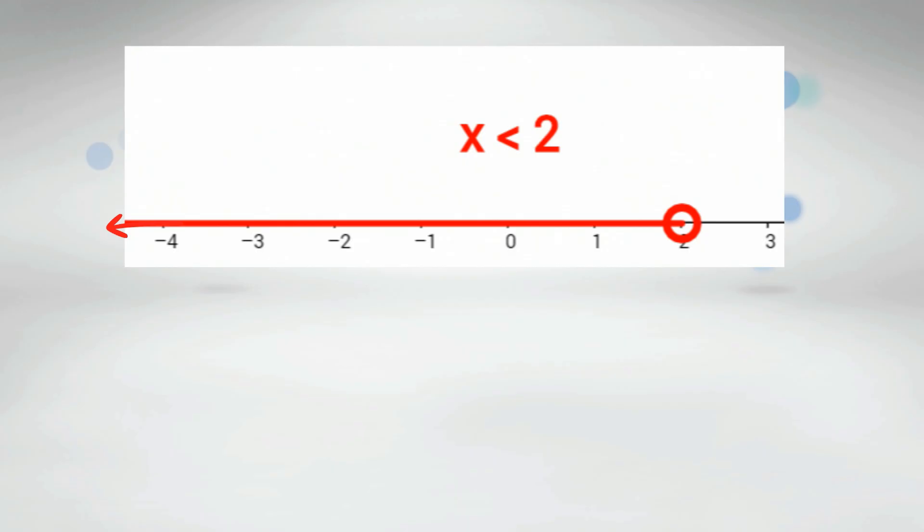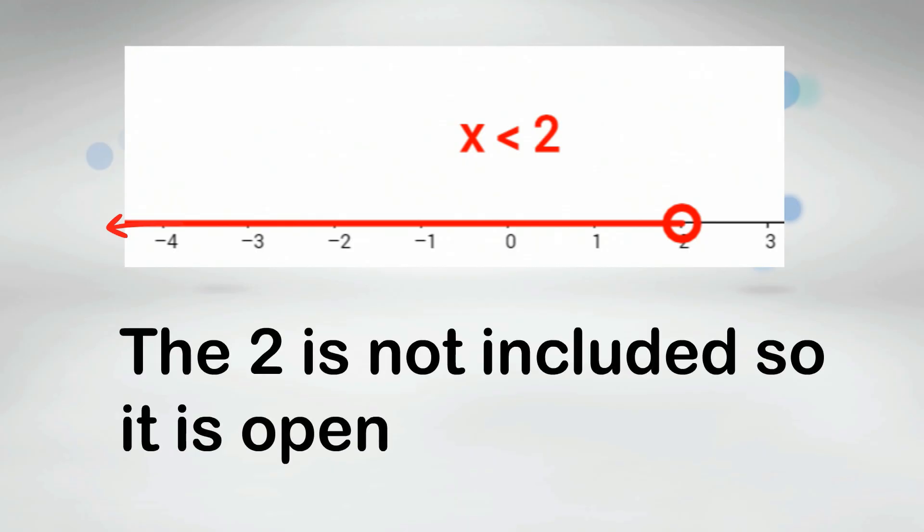Let's look at some more examples. X is less than 2. Remember less than will not be included so it will be open and the 2 will not be included.